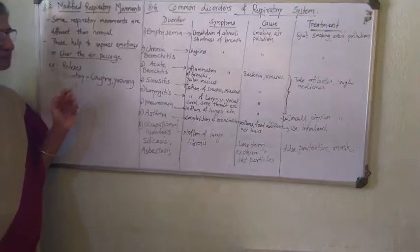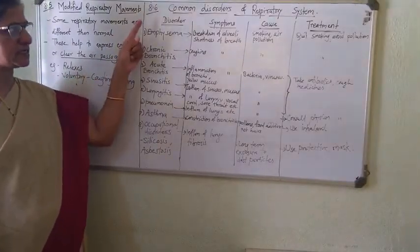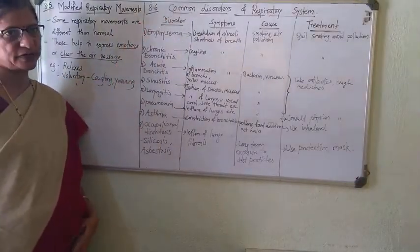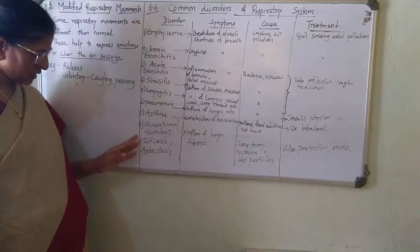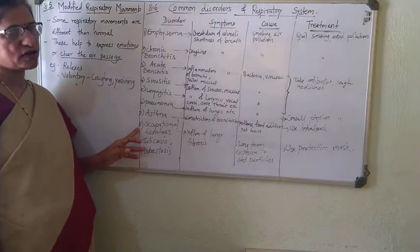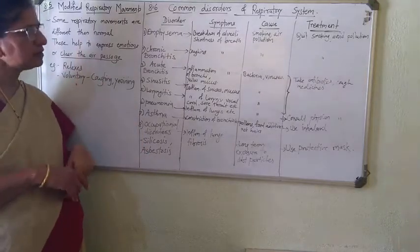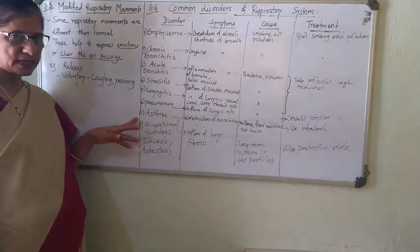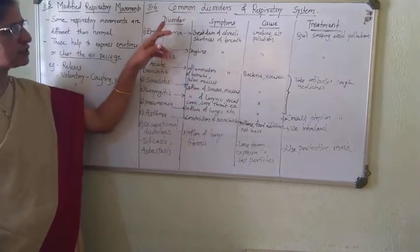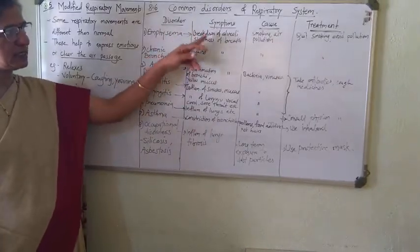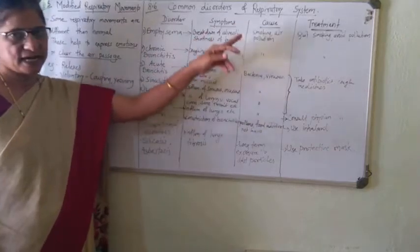Now we move to the last section, 8.6: common disorders of the respiratory system. There are a total of 8 disorders given in our textbook in a chart. Learn that chart by its four columns: name of disorder, symptoms, causes, and treatment.